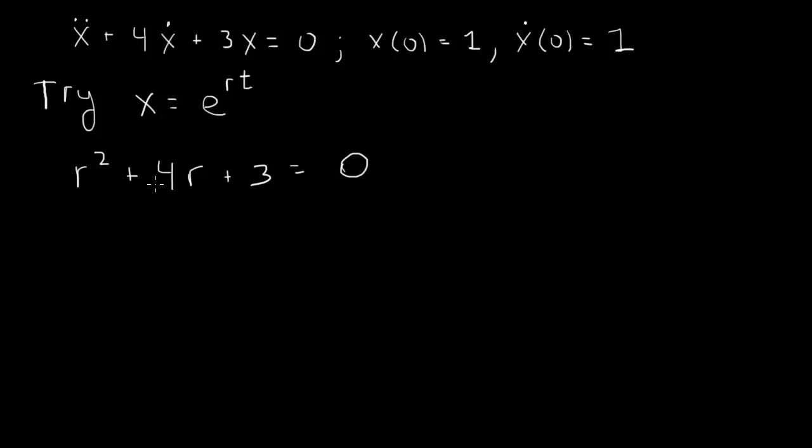This is the characteristic equation that we get for this differential equation. We can see if it's factorable. 3 times 1 is 3 and 3 plus 1 is 4, so this factors to r plus 3 times r plus 1 equals 0. So we have two roots: r1 equals minus 3 and r2 equals minus 1.